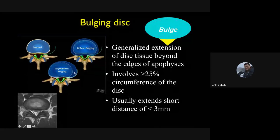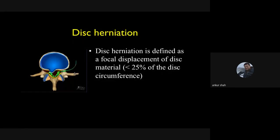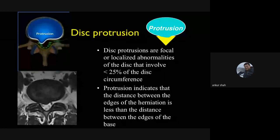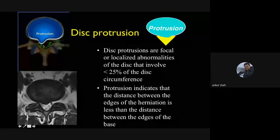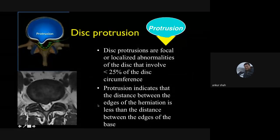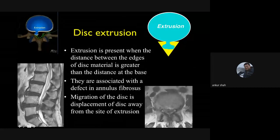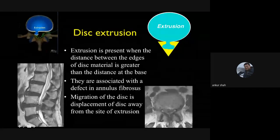Disc herniation is a non-specific term; it should be characterized as protrusion or extrusion. Protrusion is a focal disc herniation involving less than 25% of the disc circumference where the base is broader than the tip. Disc extrusion is also focal, involving less than 25% of the circumference, but here the base is narrow and the tip is broader — disc material comes out through a small defect. Many extruded discs migrate cranially or caudally from the disc level and compress nerve roots.